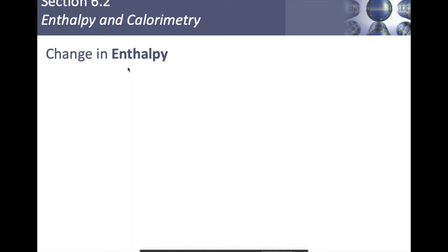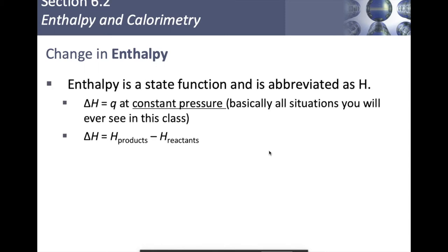The first thing we're going to talk about is change in enthalpy. Remember that last time we referred to the law of conservation of energy and we told you what energy is, what heat and work are. Heat is an example of something that is not a state function, which means that a state function is something that only depends on the final state and the initial state — it doesn't matter the pathway you take. Enthalpy, however, is a state function, abbreviated as capital H. The change in enthalpy is equal to heat at constant pressure, which is basically any situation you'd see in this class. If you're changing the pressure, it's no longer going to be equal to heat anymore — there's also work and other stuff being done.